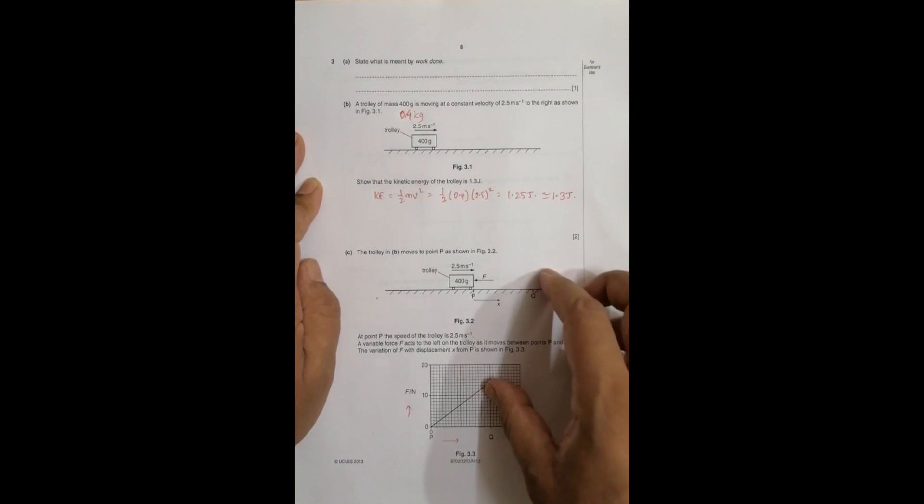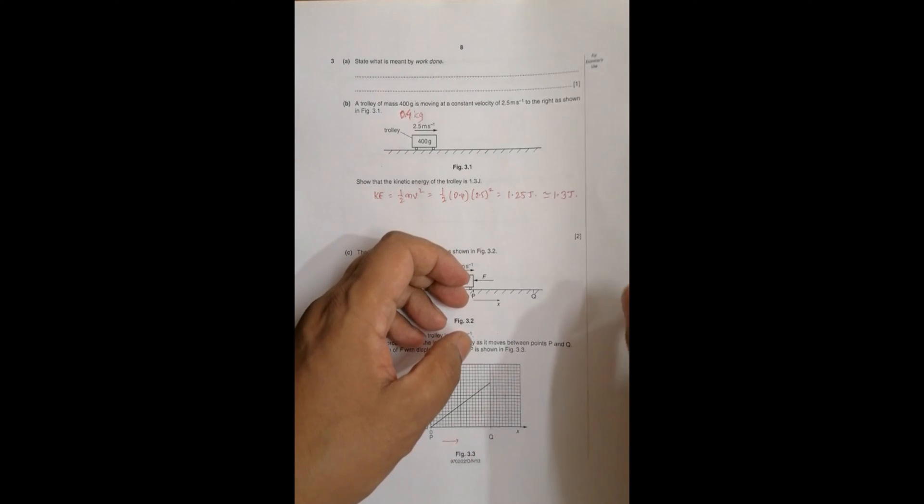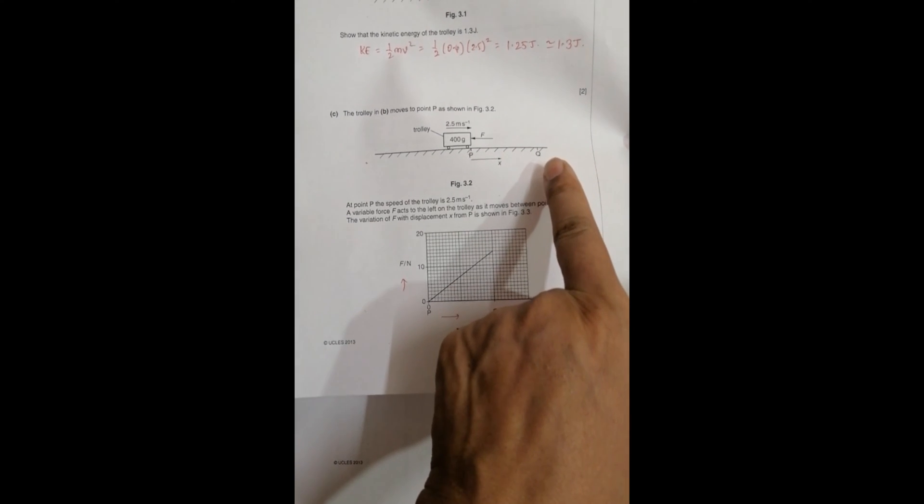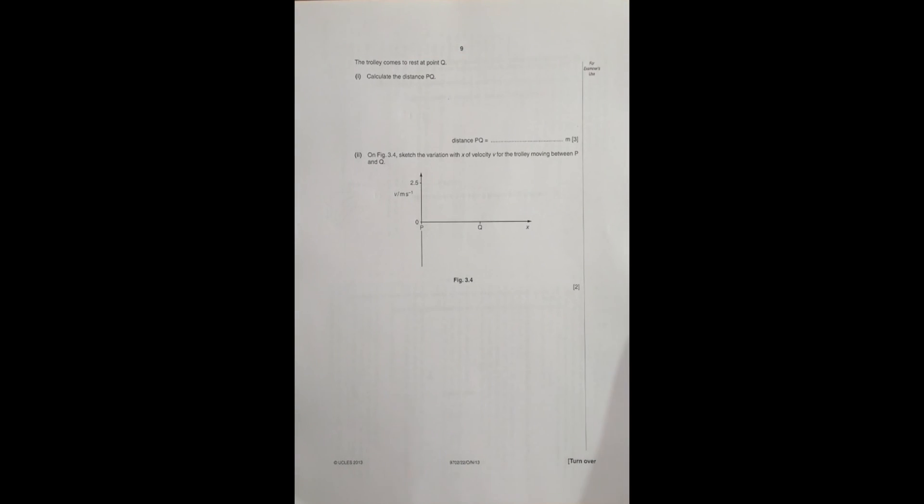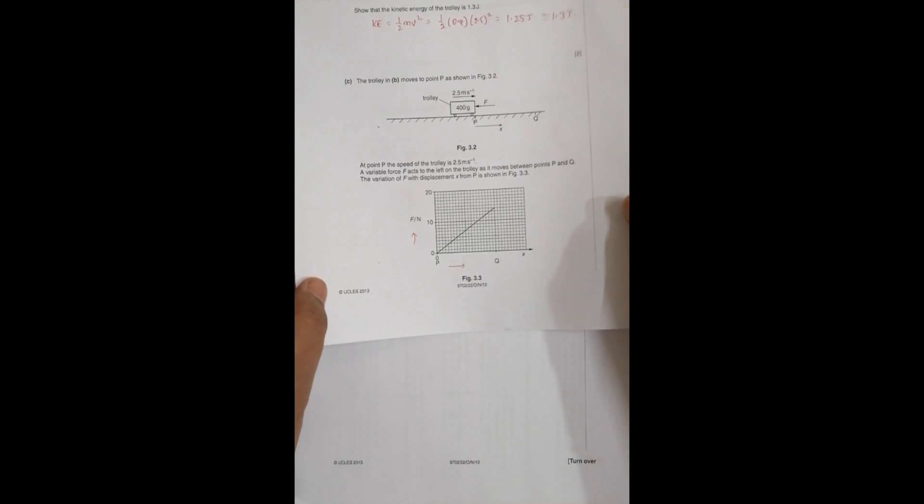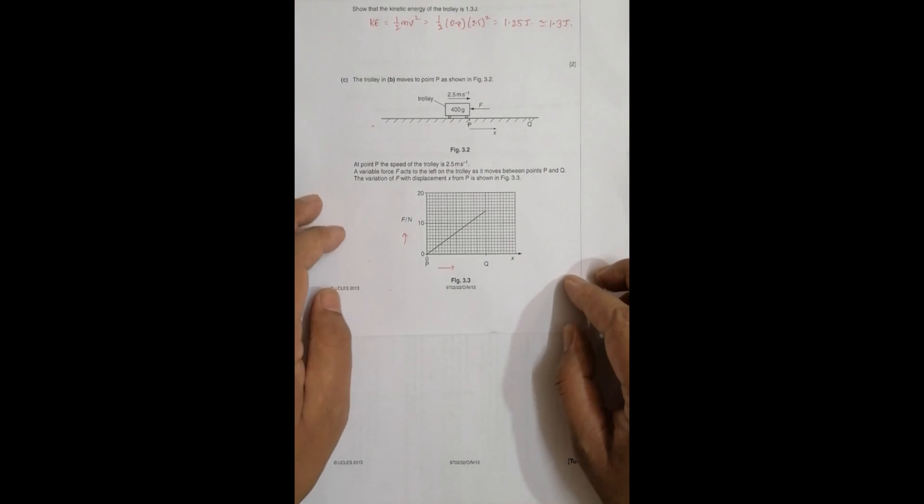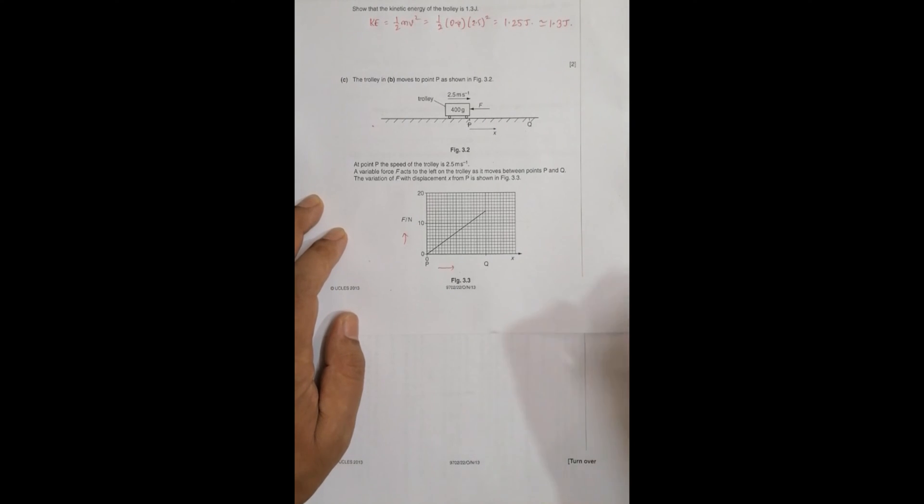Now, the question asks us: the trolley comes to rest at point Q. At point Q, the trolley comes to rest. Calculate the distance PQ.